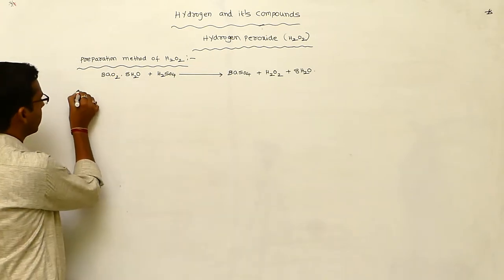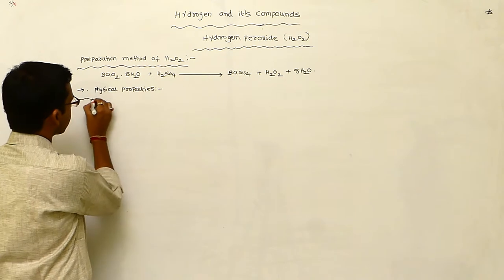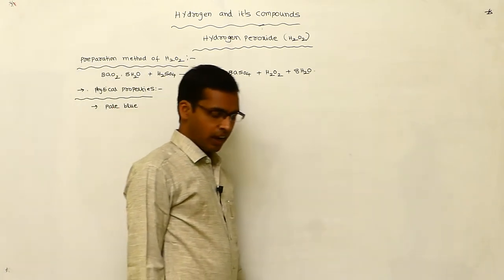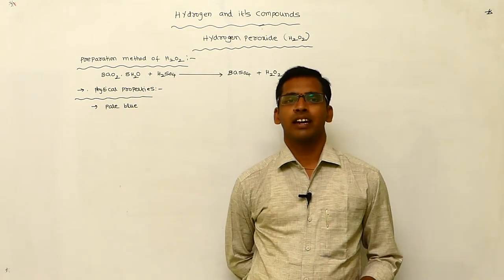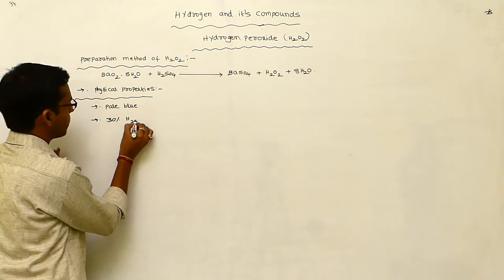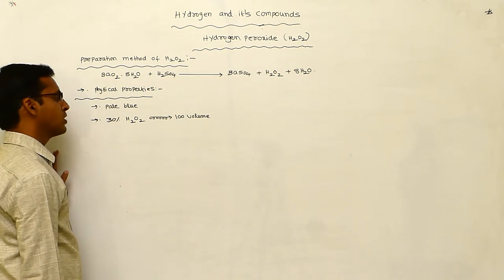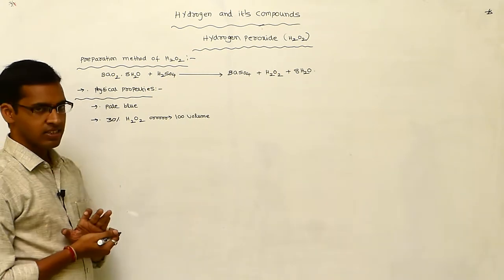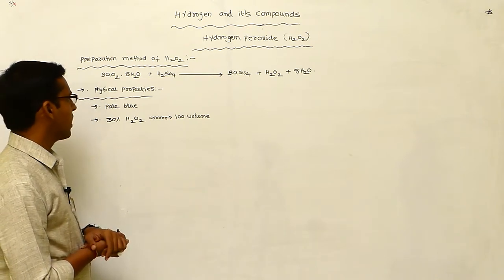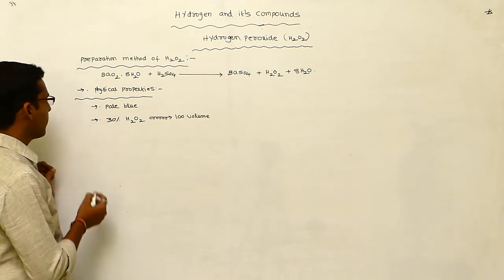Physical properties of hydrogen peroxide: hydrogen peroxide is colorless, but sometimes it appears as a pale blue color. The 30% hydrogen peroxide is considered as 100 value — meaning 30% hydrogen peroxide contains 100 volume value.